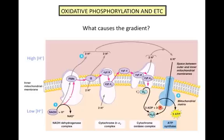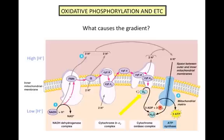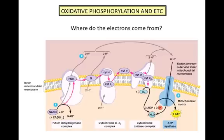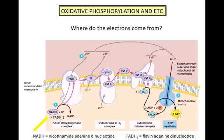The concentration gradient doesn't just exist — it is created by electrons moving along the electron transport chain, where they begin at a higher potential energy and end at a lower potential energy. The electrons move down the chain until they are accepted by oxygen, the final electron acceptor, where they combine with hydrogen to make water, one of the byproducts of cellular respiration. The electrons that flow down the chain are shuttled to the beginning of the electron transport chain by electron carrier molecules NADH and FADH2.